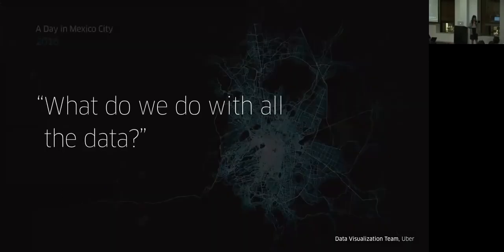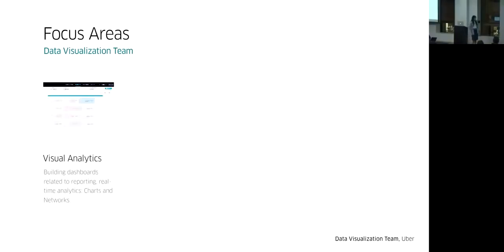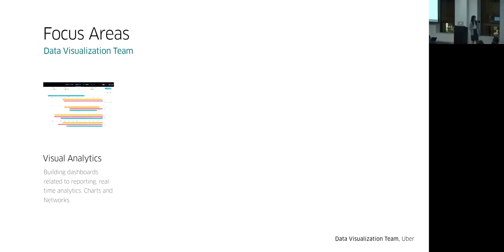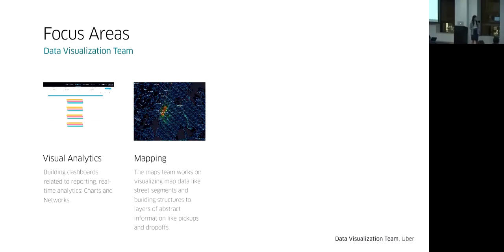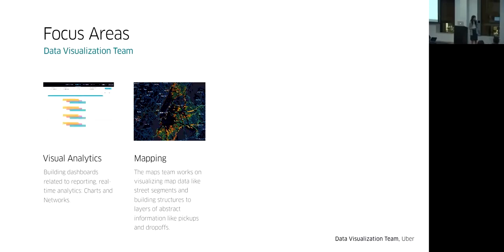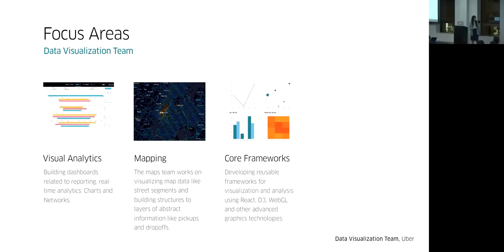So what do we do with all this? We want to contribute our specialties to the growth of our business and help build a more intelligent and efficient system. There are a couple of focus areas for our team. First, we build visual analysis tools, mainly helping our business intelligence team build reporting and real-time analysis with charts and networks. We also invest heavily in mapping applications — we love geospatial data. We're also working on open source core frameworks so anyone can use our libraries to build pretty visualizations.